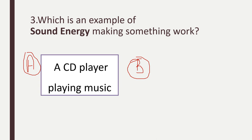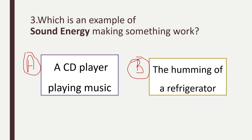Number three: which is an example of sound energy making something work? Pause the video and choose your answer. Make sure to explain why. Letter A says a CD player playing music — is sound energy making something work? Yes, it's making the music. Letter B is the humming of a refrigerator. The humming is a sound, but is it making something work? No, that humming is not creating anything new. Therefore, my answer is A.